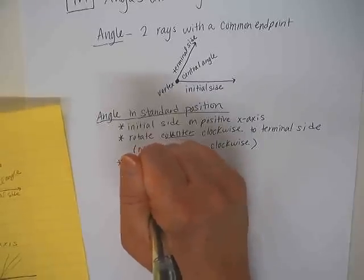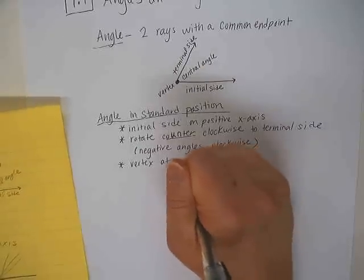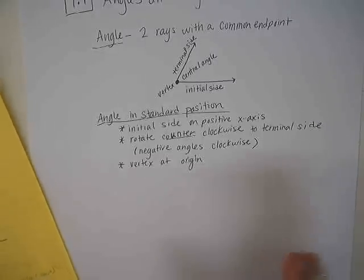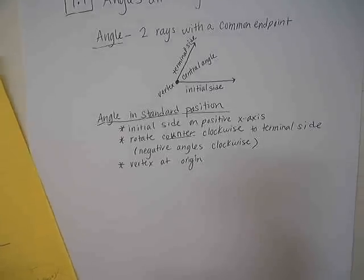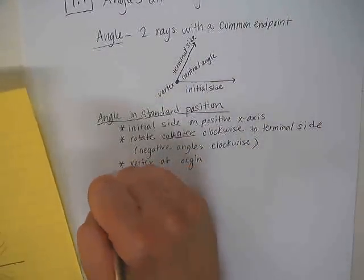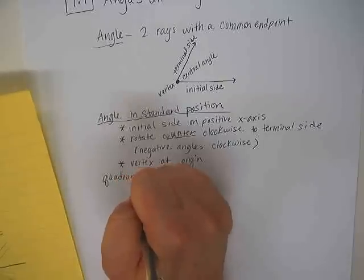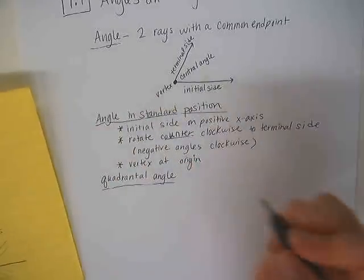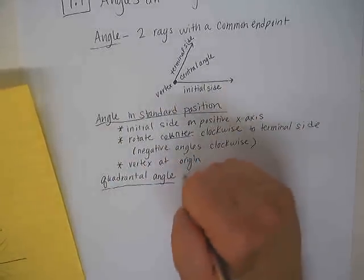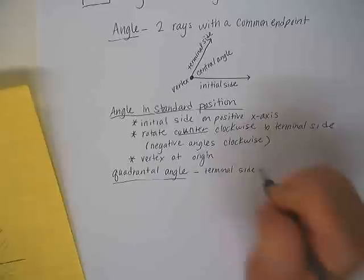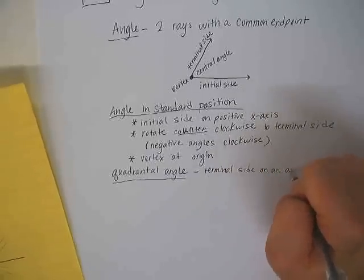The vertex is at the origin. Sometimes your angle in standard position — the terminal side — will land on another axis, like the y-axis, the x-axis, the negative x-axis, or the negative y-axis. When that happens, we call that a quadrantal angle.